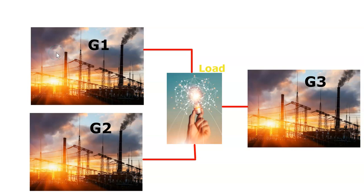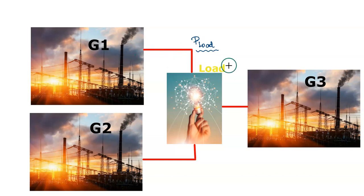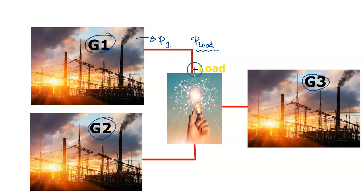Let us consider this case. Let the load demand by the customer be P-load. The electrical power required for this load can be supplied from different generating units. Here we have connected three generating units G1, G2, G3. Generating unit 1 can supply some P1 amount of electric power, generating unit 2 can supply P2, and generator 3 can supply P3 amount of electrical power to the load.